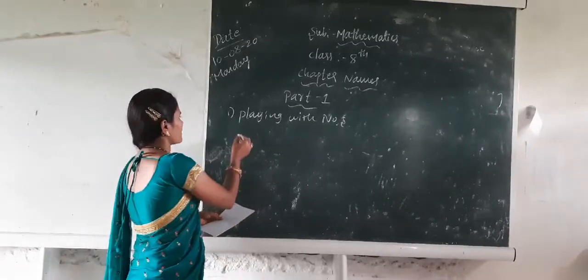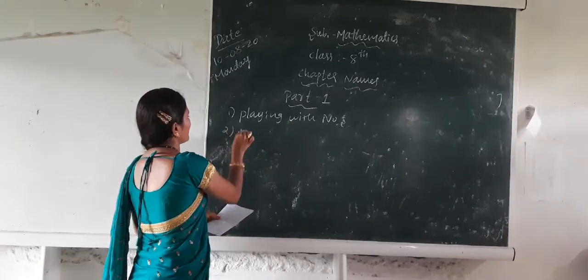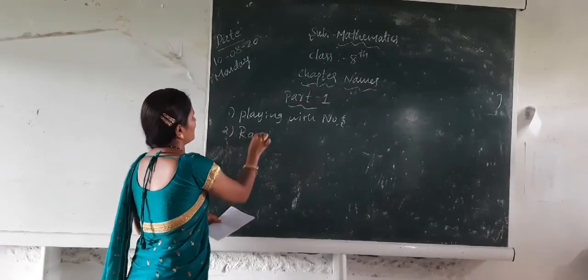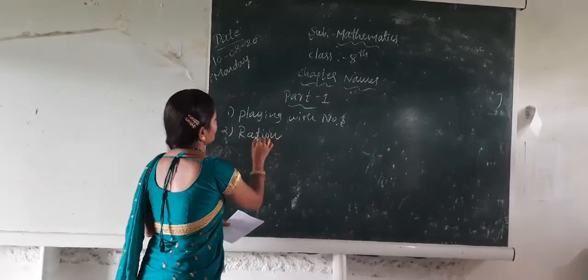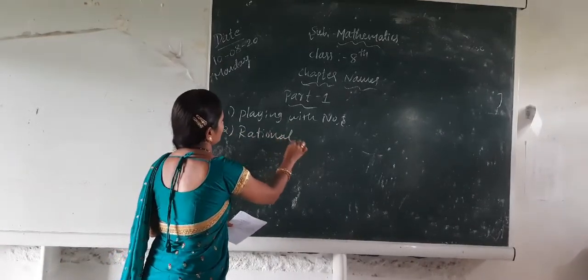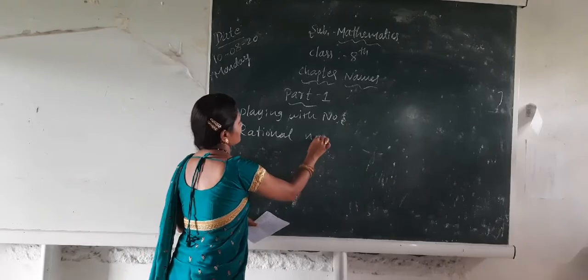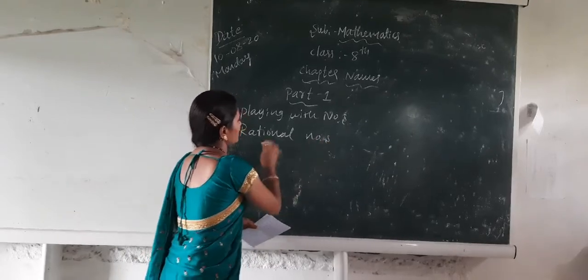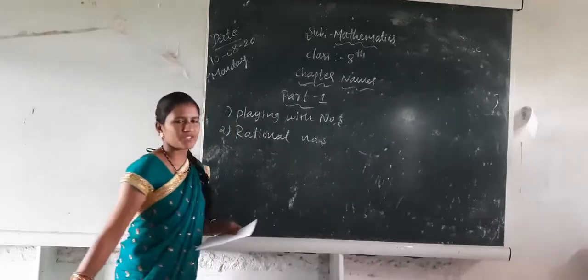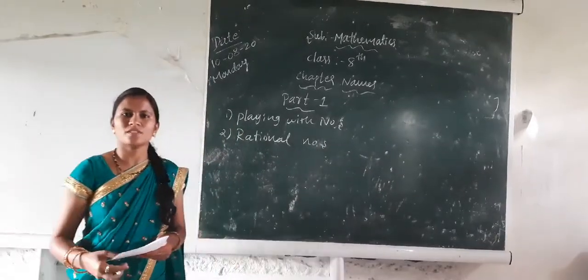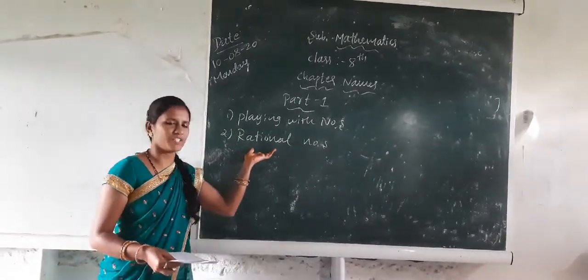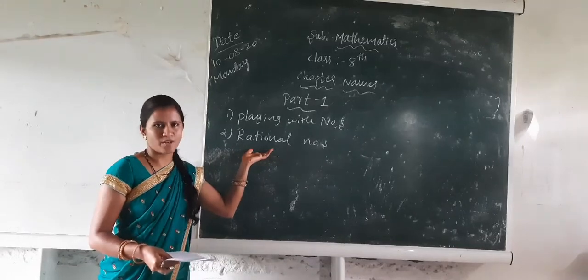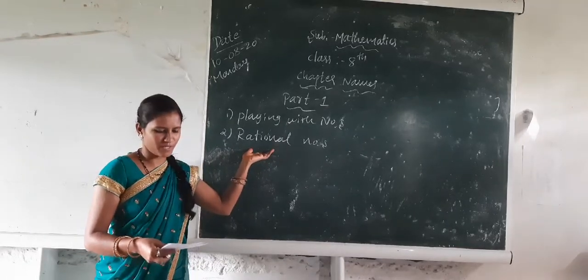The second chapter is Rational Numbers. In this chapter, there is an introduction, definitions, and problems to solve.